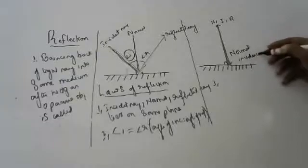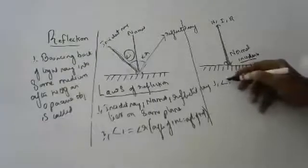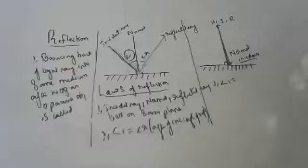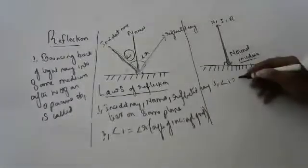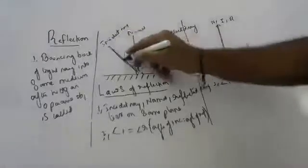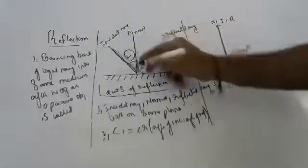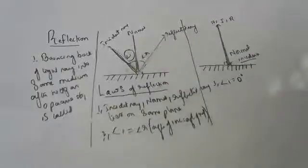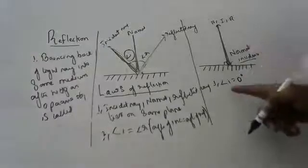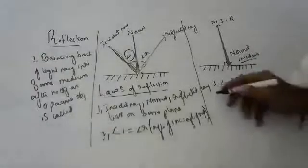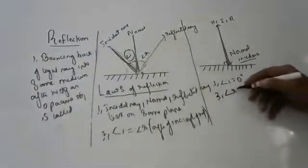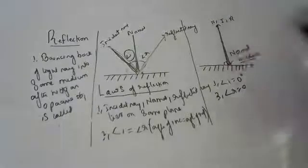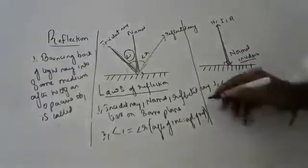What is the angle of incidence in normal incidence? It is zero degrees, because there is no angle between the incident ray and the normal — they are the same line. And since angle of incidence equals angle of reflection, the angle of reflection is also zero degrees.